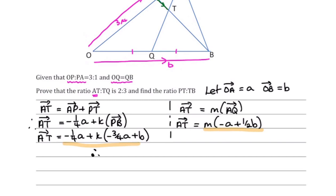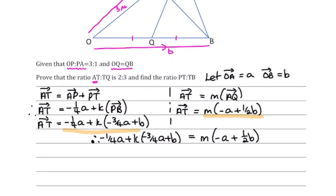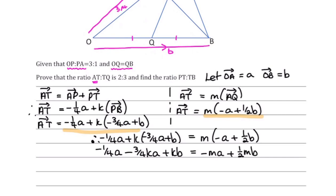I'm going to put those two routes equal to each other. So: minus a quarter of a plus k(minus three-quarters a plus b) equals m(minus a plus one-half b). Expanding: minus a quarter a minus three-quarters k·a plus k·b equals minus m·a plus one-half m·b.